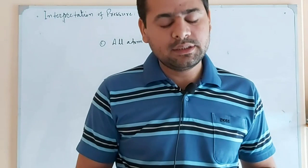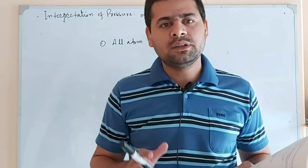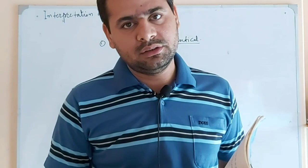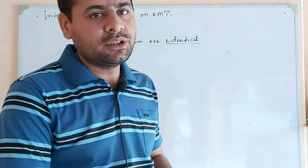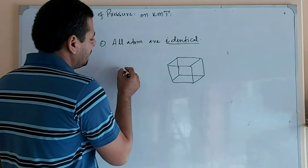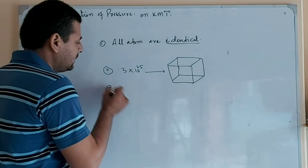Second postulate: any finite volume of a gas consists of a very large number of molecules. When we have finite volume of a gas, the number of atoms are very large. This assumption is justified by experiment. At STP conditions, there are 3 times 10 to the power 25 molecules in a cubic meter. In a cubic box, we have 3 times 10 to the power 25 atoms and molecules. This is the second postulate.